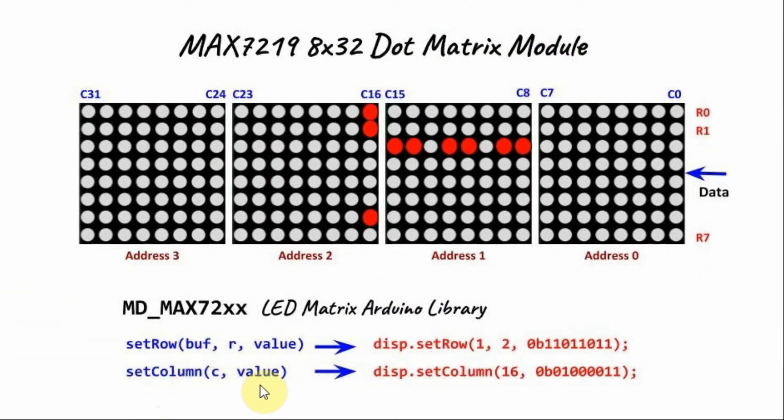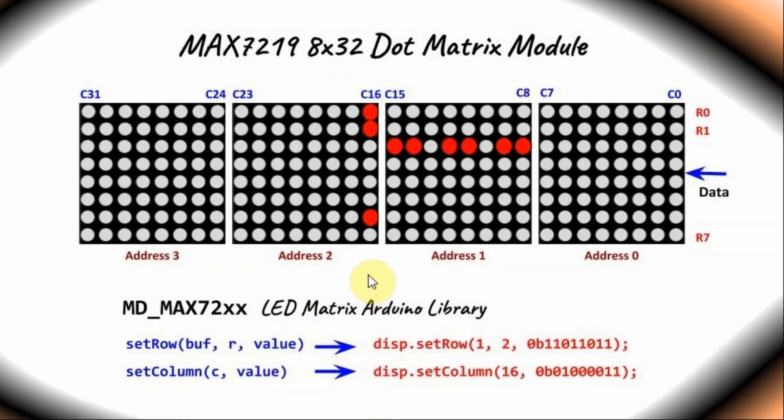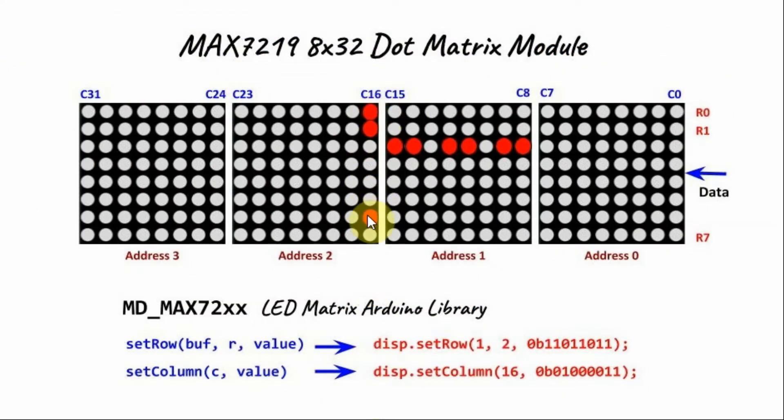Function setColumn has two arguments, C and value. C is the column position, which is from 0 to 31. And value is the value at each column, which is an 8-bit binary number between all zeros to all ones. As an example, let's say we want to sketch this column pattern here. So this is located at column 16. And the pattern value is 11000010. So we use the function setColumn, column 16. And this is the binary value. Executing this statement will give us this shape.